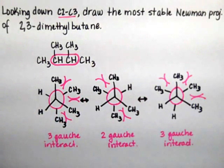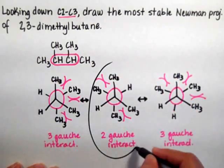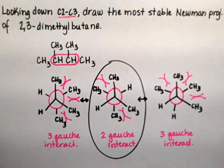So this one right here in the middle is the most stable Newman projection for 2,3-dimethylbutane.